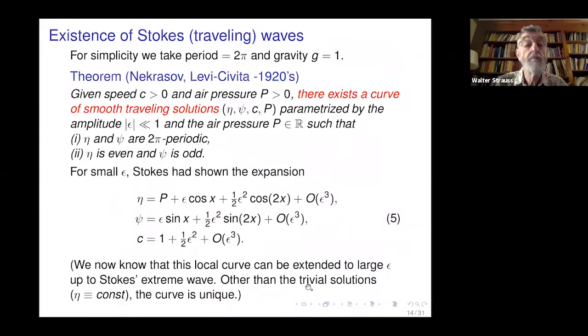Back 100 years ago, the theorem of Necrasov and Levy-Chibitav proved there is a nice curve of smooth traveling waves. At least they're small, a nice little curve. This is the Stokes expansion which he had done many decades earlier, which is correct. We're going to use this expansion.